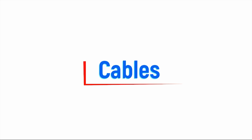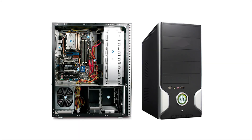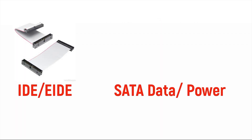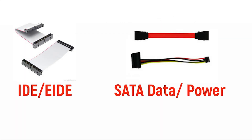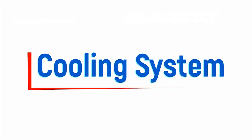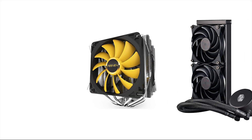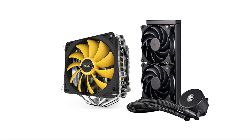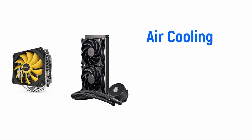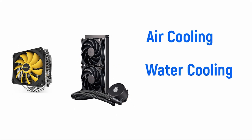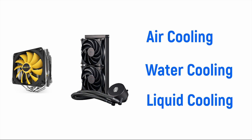Cables. There are several types of cable within the system unit: IDE/EIDE, SATA data and power — they are the main ones. Cooling system. Computer cooling is required to remove the waste heat produced by computer components to keep components within permissible operating temperature limits. There are three main types: one, air cooling; two, water cooling; three, liquid cooling.